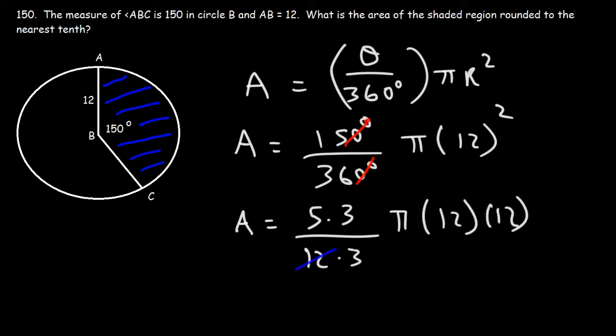So we can cancel a 12, and we can cancel a 3. So we're left with 5 times 12 times pi. 5 times 12 is 60, so we get 60 pi.